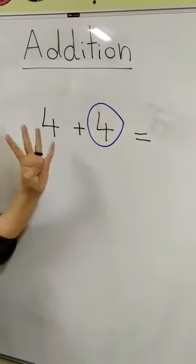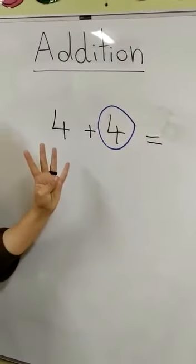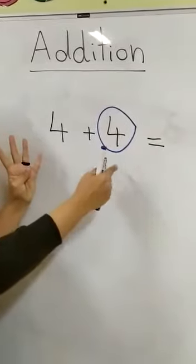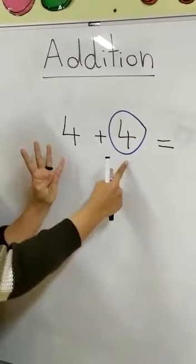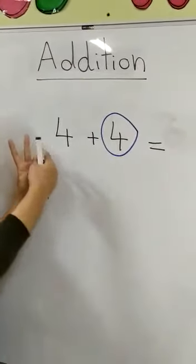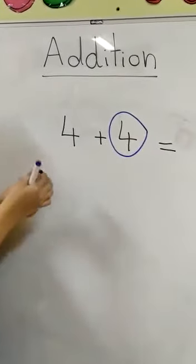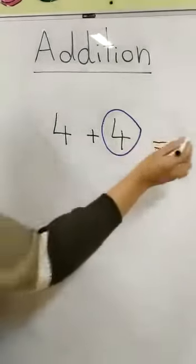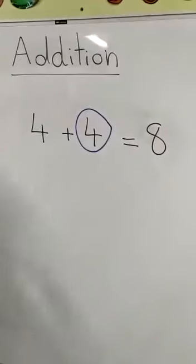Let's put the four on your fingers — all of you, show me four fingers. Excellent! After the number in the circle, after four: five, six, seven, eight. Excellent! So four plus four equals eight.